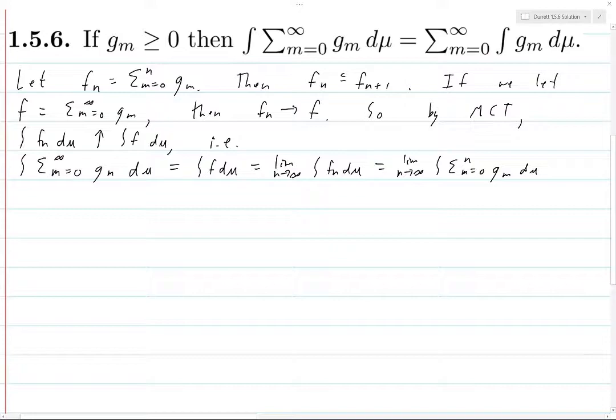But we do know that we can interchange integrals with finite sums. So if you have an integral of a finite sum, that's the finite sum of the integral. We still have this limit as n goes to infinity on the outside, but now we've got the sum from m equals zero to n of the integral of g_m dμ.